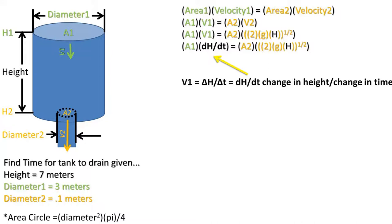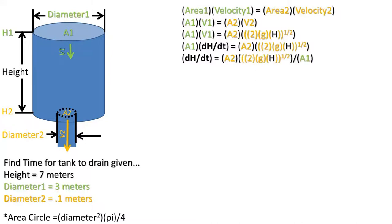The change in displacement over the change in time is the definition of velocity. We can now plug in dh over dt into the equation where velocity 1 was. For our next step, we need to use algebra to get everything to one side except for dh over dt. Then we will group all of the values that remain constant and set that equal to the constant k.